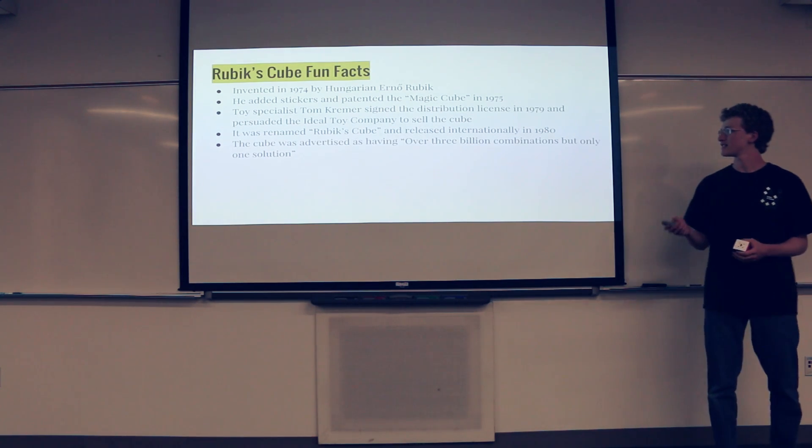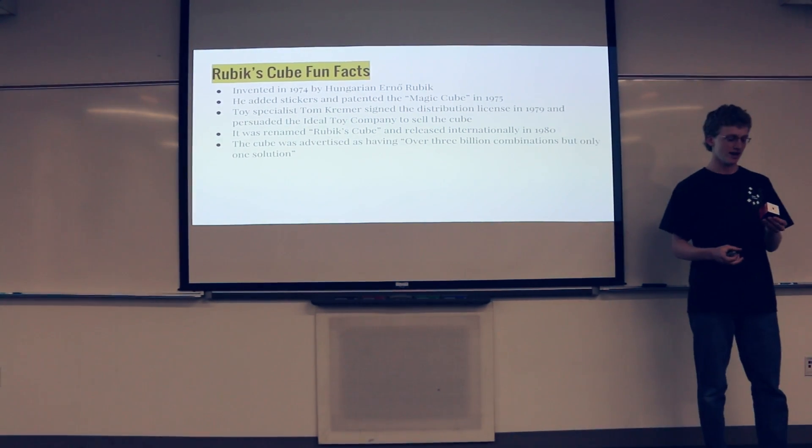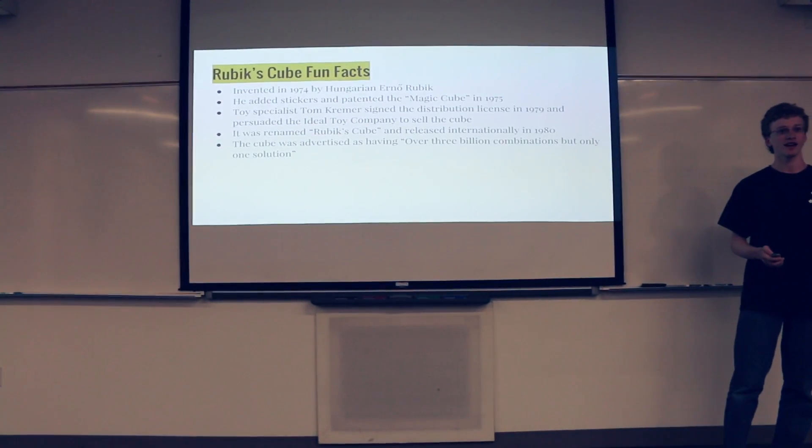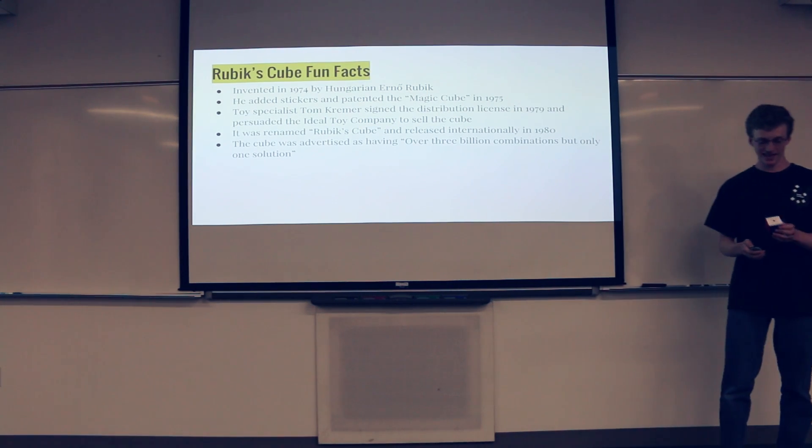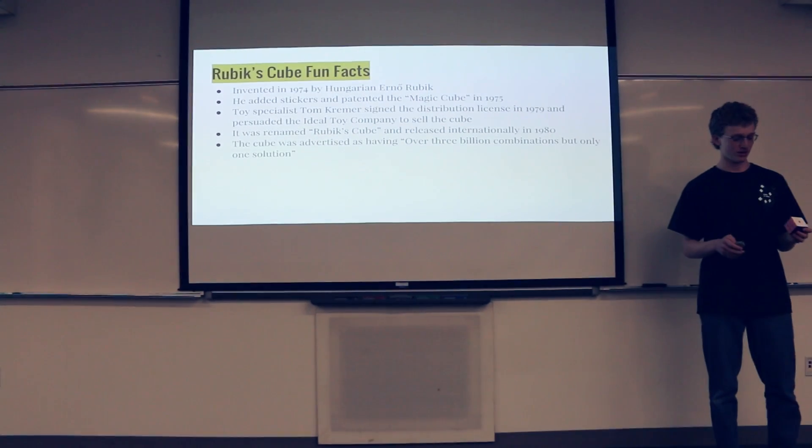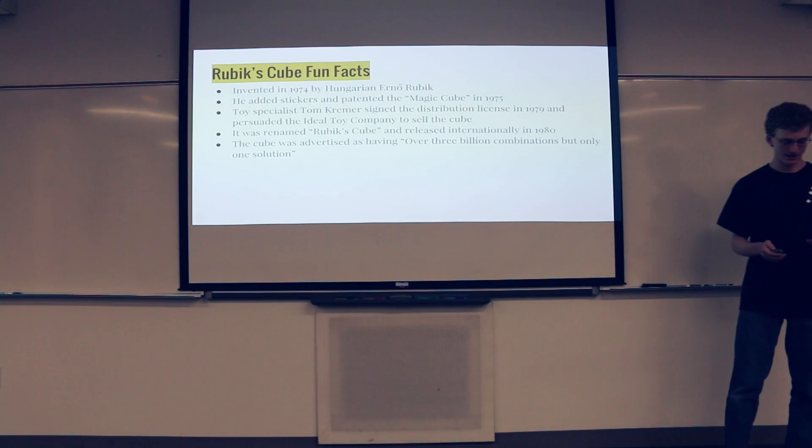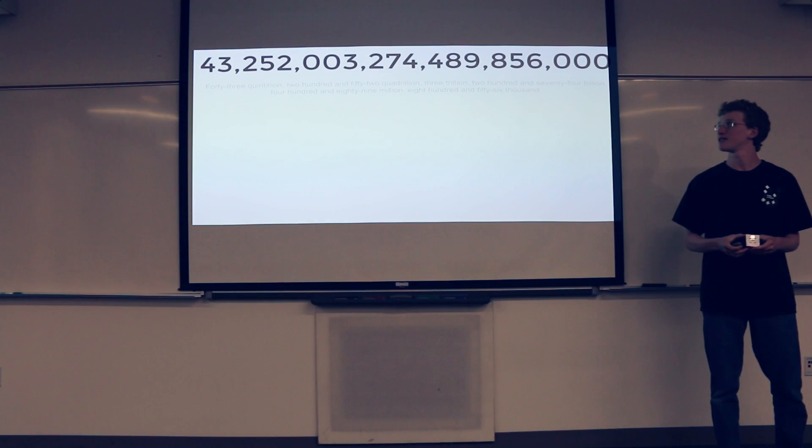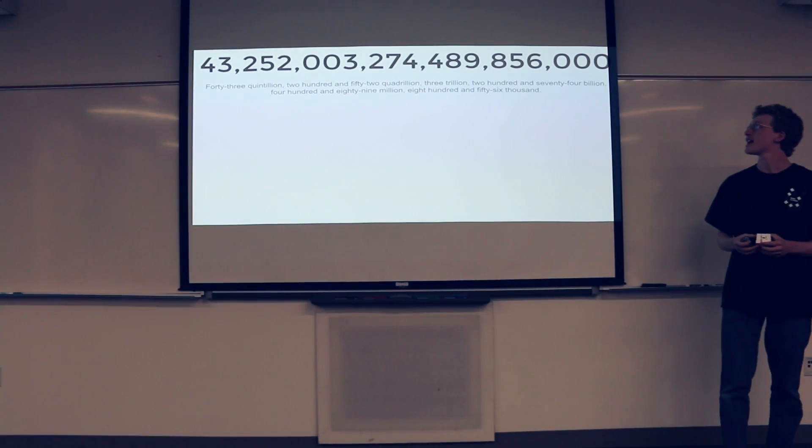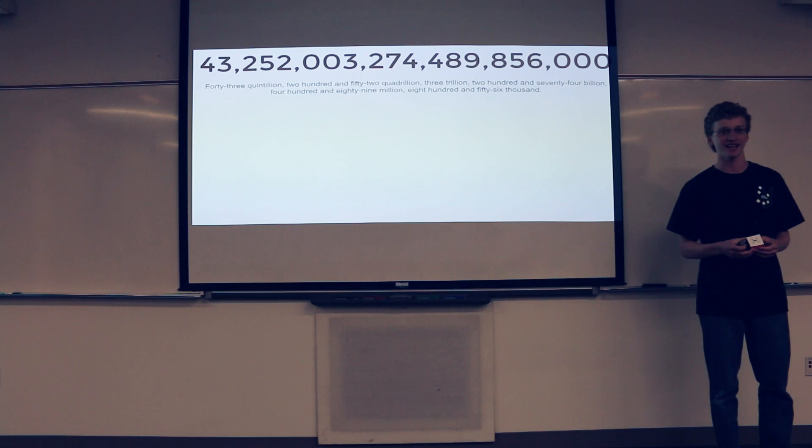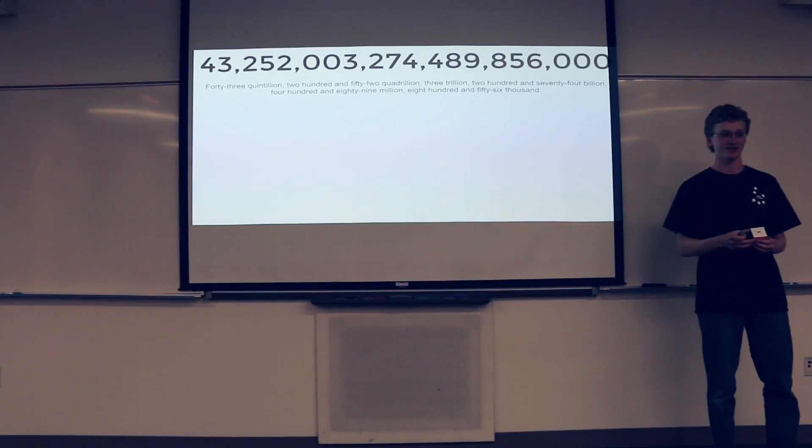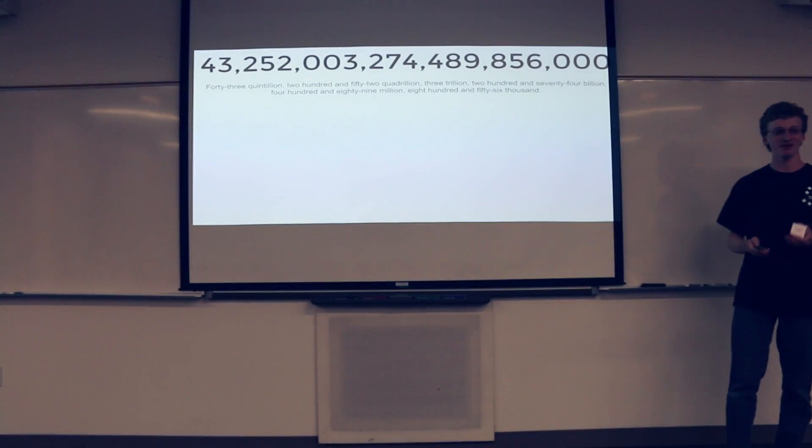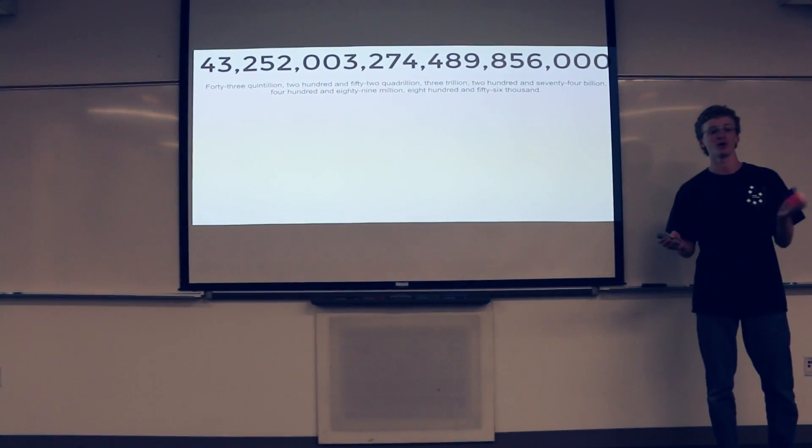And I think this is pretty interesting. One of the first advertisements said that the cube had over three billion combinations, but only one solution. This is true, but it actually has way, way, way over three billion combinations. It actually has about, or exactly, 43,252,003,274,489,856,000 combinations. So saying it has more than three billion is kind of like saying there's just more than one person on Earth.